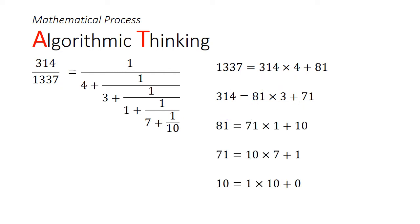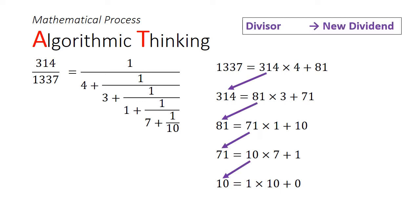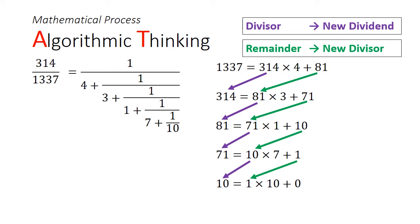Just to recap, the pattern is to change the old divisor into the new dividend, and the old remainder into the new divisor. We keep repeating this until we get a remainder of 0.